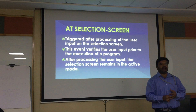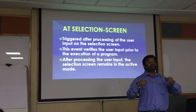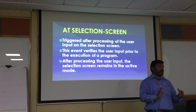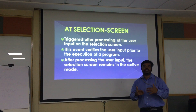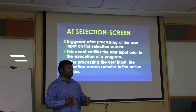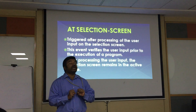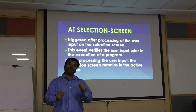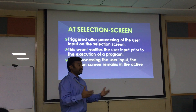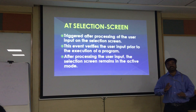The AT SELECTION-SCREEN event is triggered whenever the user performs any action on the selection screen. You write logic pertaining to the selection screen within this event. For example, validations are done here — if there is an invalid input, a pop-up or message can be shown. You can also check whether data exists for a SELECT statement and immediately display a message on the selection screen that there is no data for this condition, even before proceeding to the next screen.